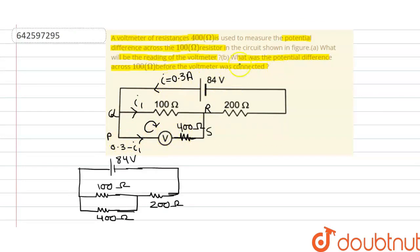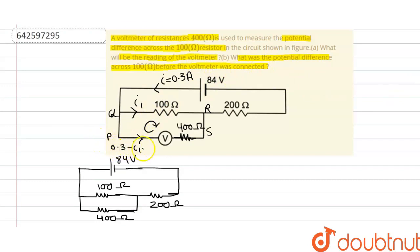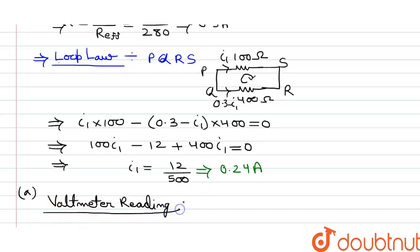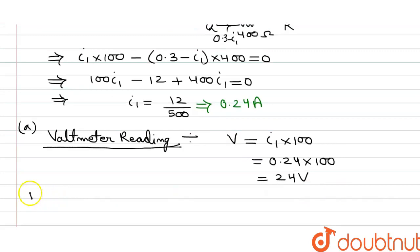For Part A, the voltmeter reading equals the potential drop across the 100 ohm branch. Voltmeter reading V equals i1 × R equals 0.24 multiplied by 100, which gives us 24 volt. So the voltmeter reading is 24 volts.